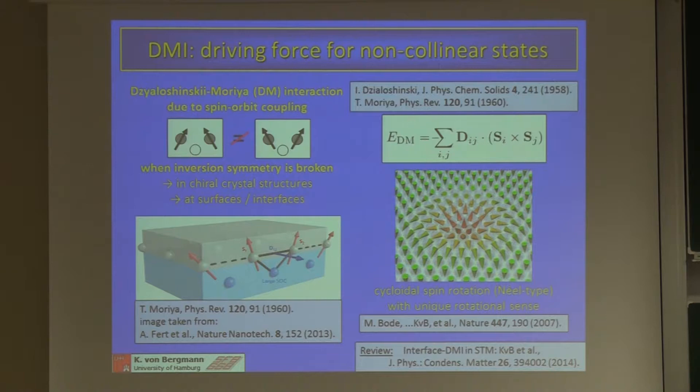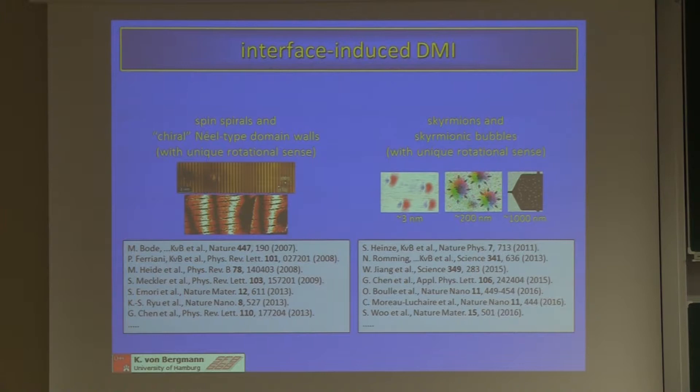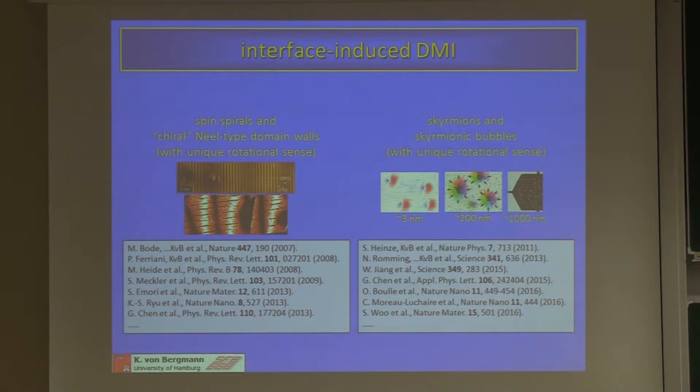These DMI systems are studied as uniaxial spin textures, such as spin spirals or Néel-type domain walls with a unique rotational sense. But also recently they are studied in skyrmions, or skyrmionic bubbles. Importantly, due to the DM interaction they have a unique rotational sense, but they come in various sizes, as you have already seen today.